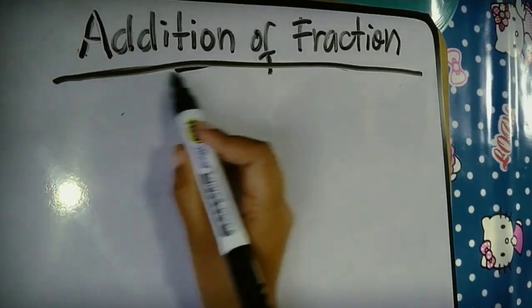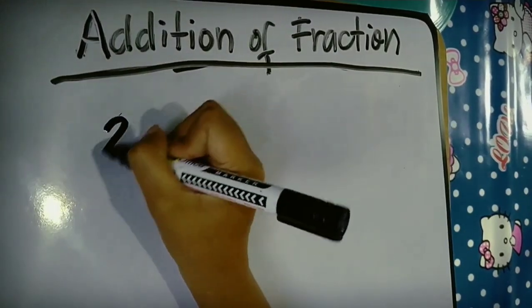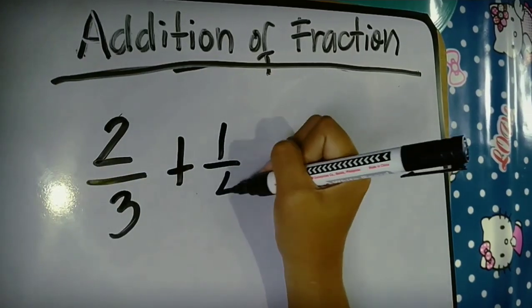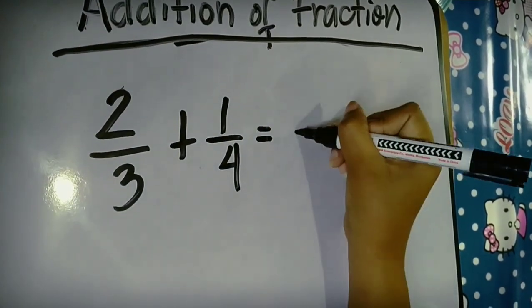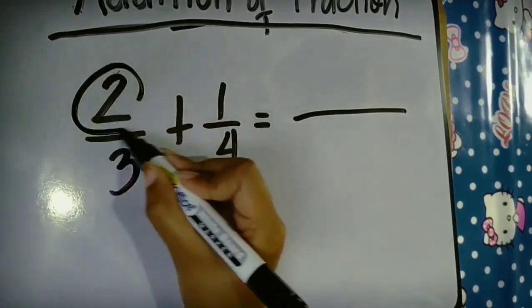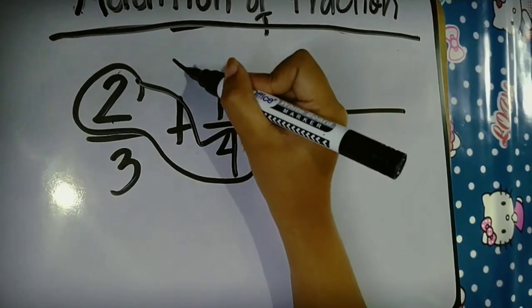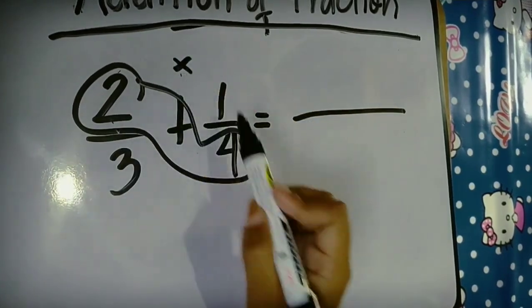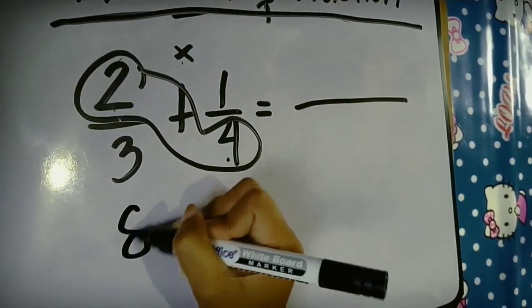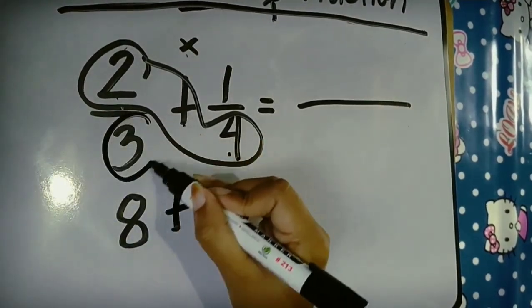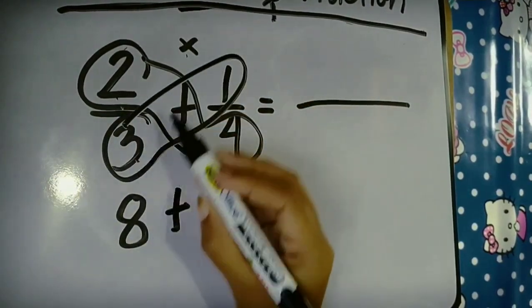Let's have another example: 2 third plus 1 fourth. Again, we must do the butterfly method in which we multiply 2 times 4. 2 times 4, the answer is 8. Then copy the plus sign and 3 times 1, the answer is 3.